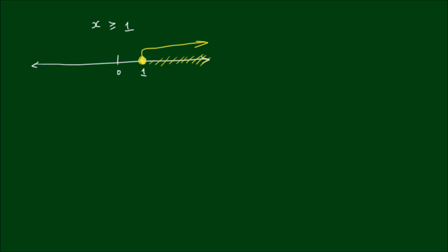This principle works exactly the same way for complex numbers. Suppose complex number z is equal to x plus iy, and I have the condition that the real part of z is greater than negative 2, which implies that x — because x is the real part — is greater than negative 2.